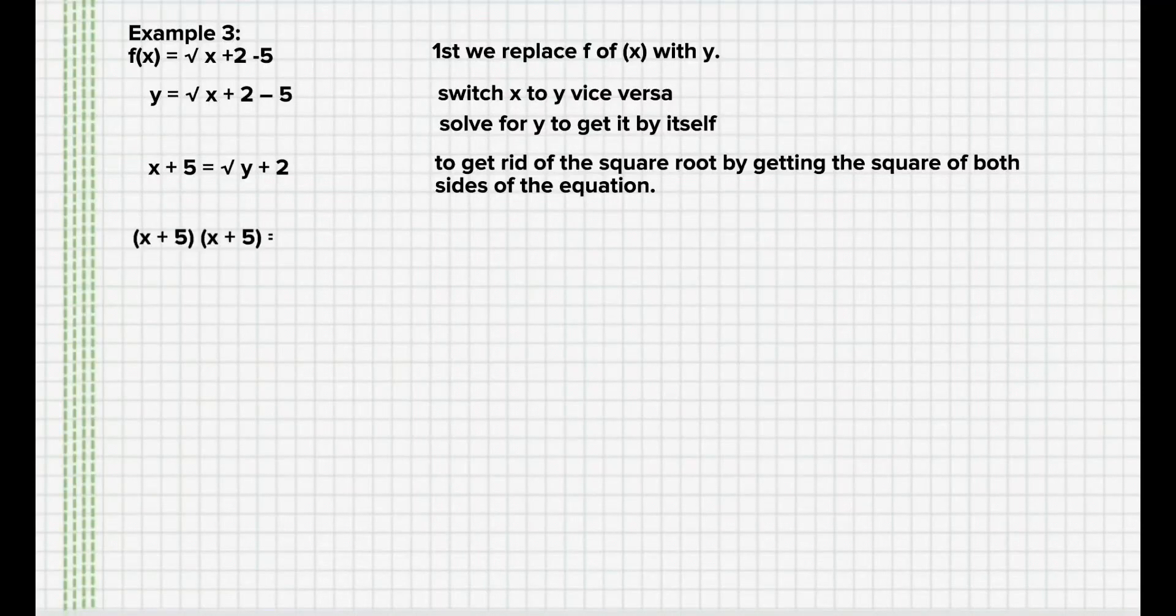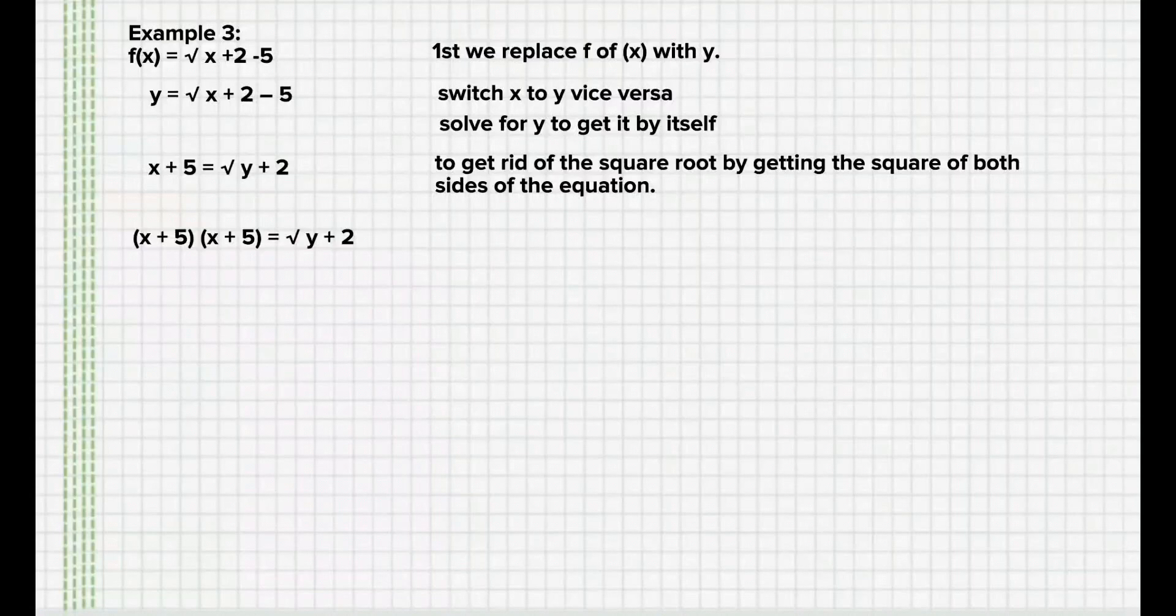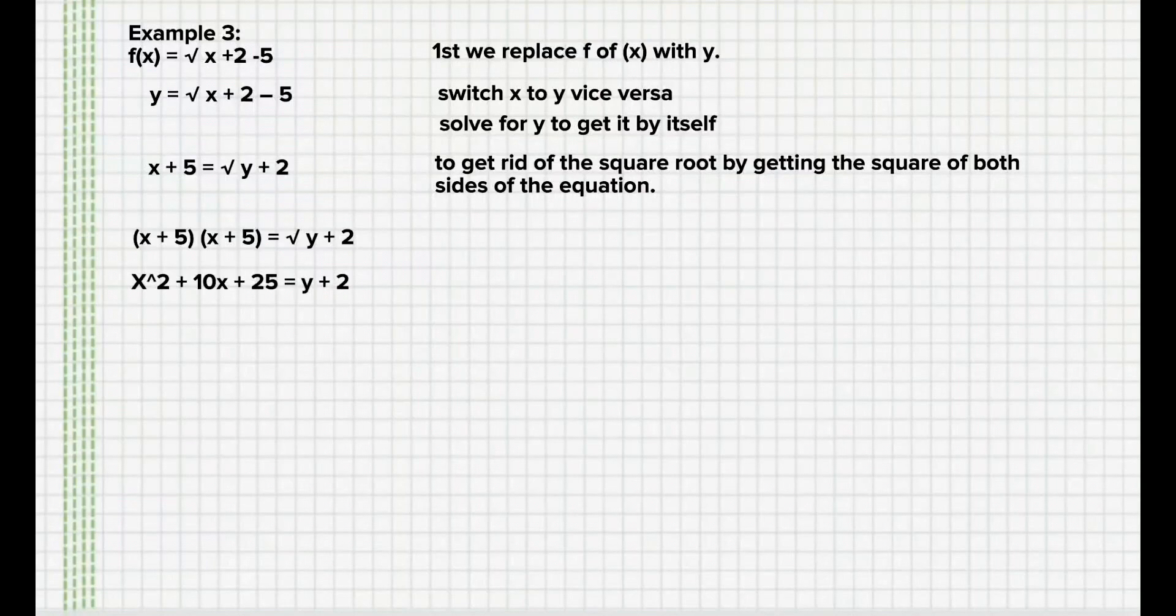(x + 5) × (x + 5) = √(y + 2). So, on the left side, we have (x + 5) multiplied by itself. And on the right, using the FOIL method, we simply have y + 2. So, we have x² + 10x + 25 = y + 2.